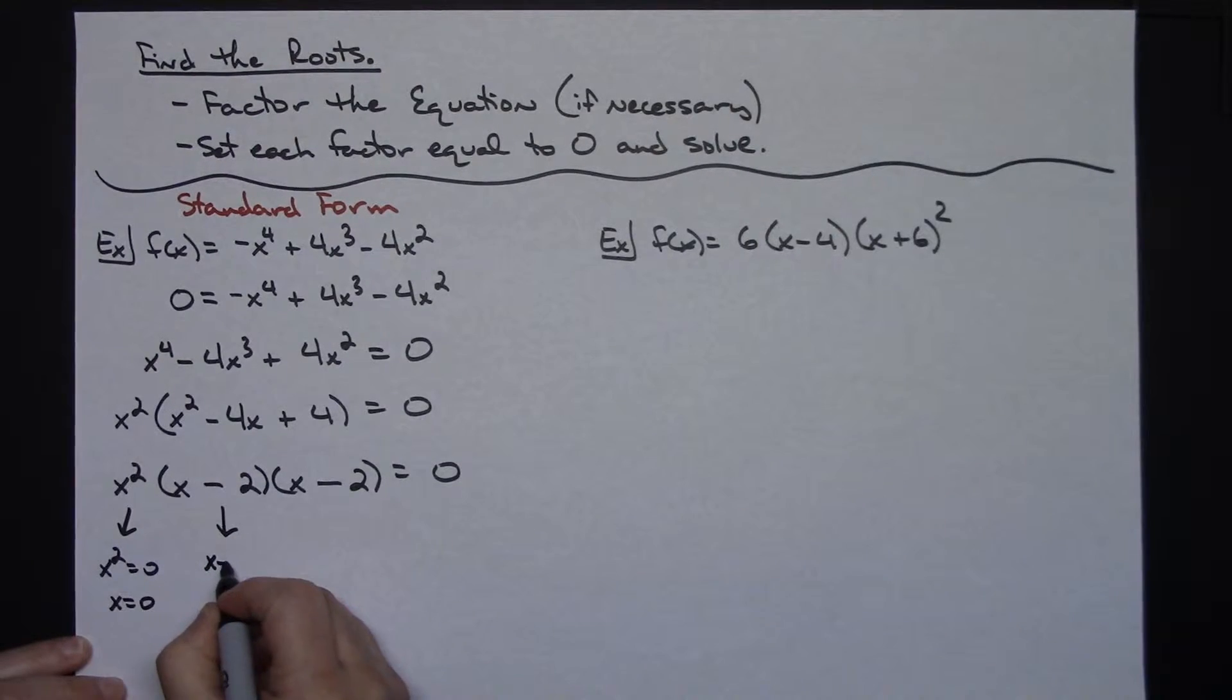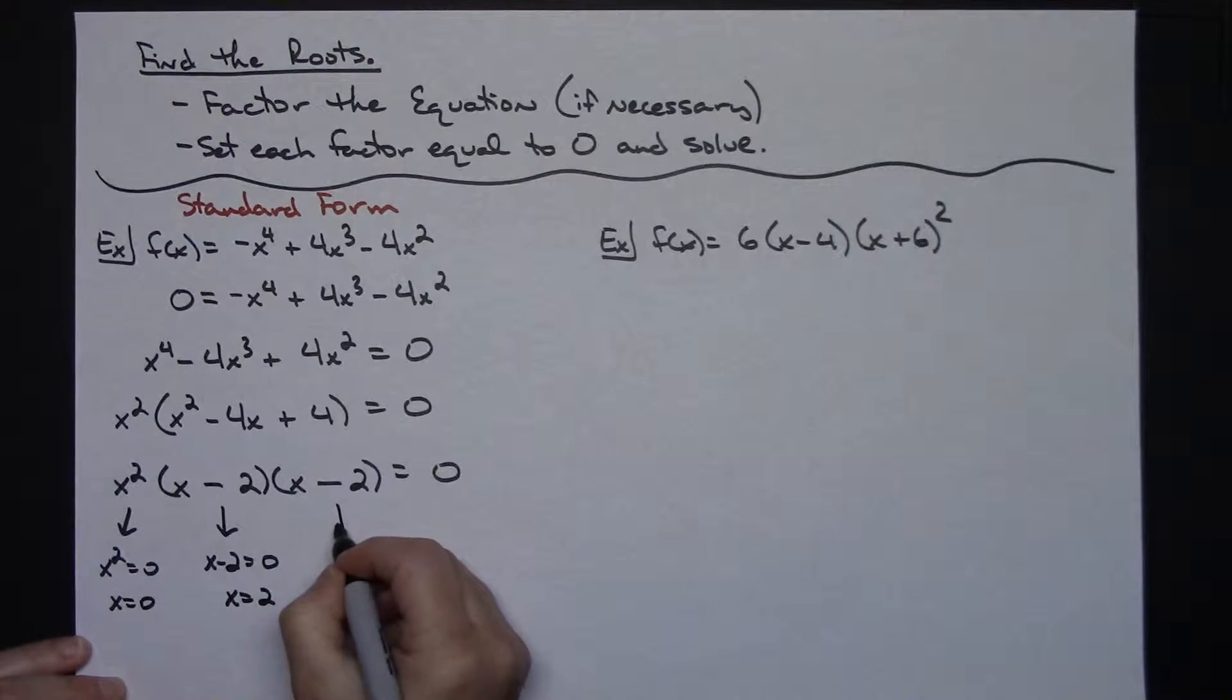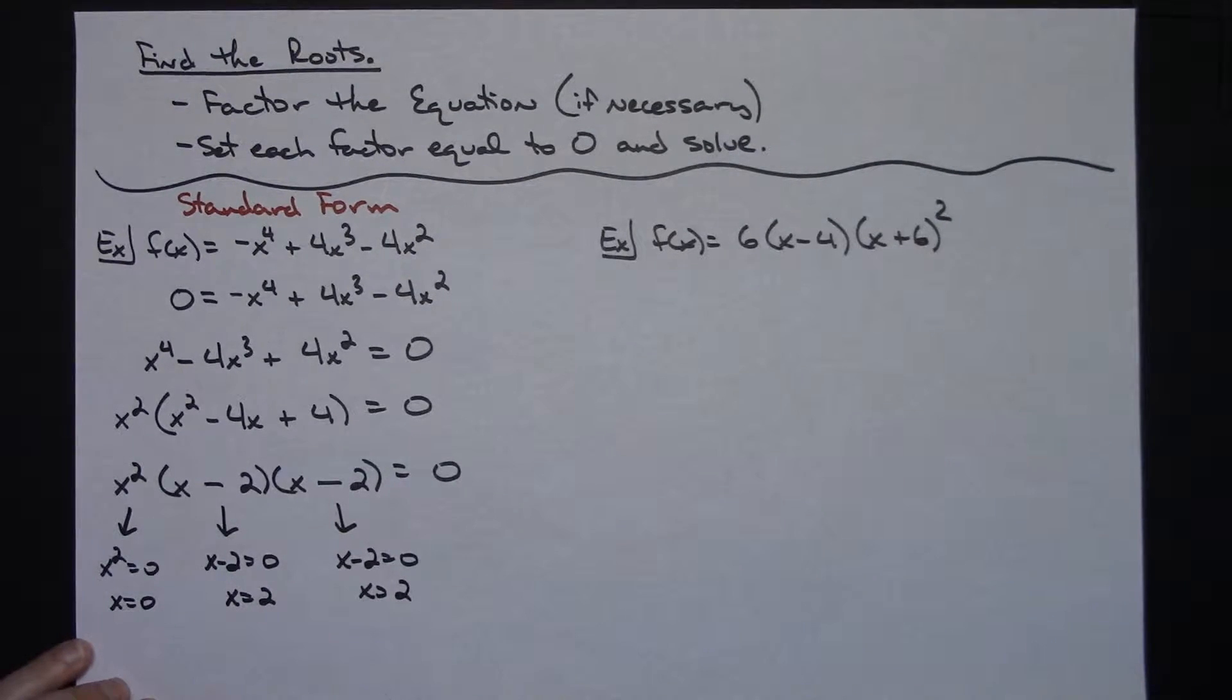This one, x minus 2, set it equal to 0, solve it. It's going to be a nice little one step equation, x equals 2. And then again on this one, x minus 2 equals 0, it's going to give me a 2 again. So I'm not going to list the 2 twice. I have roots of 0 and 2. If you're using set notation you're going to do 0 and 2. So I've found the roots as 0 and 2 on that one.